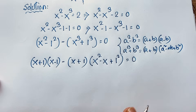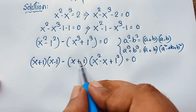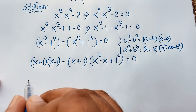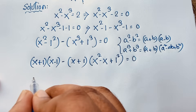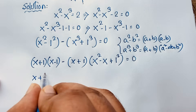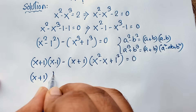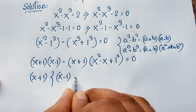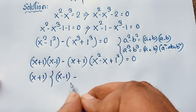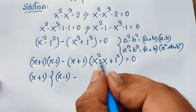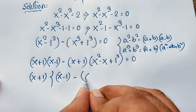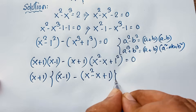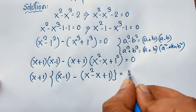Now, you can see here x plus 1 and this is x plus 1, so x plus 1 is common. If I take x plus 1 as common, this divides this — it will be x minus 1 times bracket. And this divides this, it is cancelled out. It will be x squared minus x plus 1 — is equal to 0.